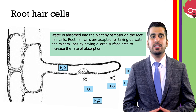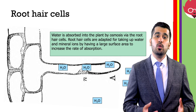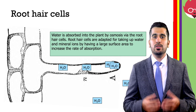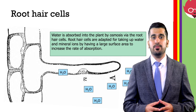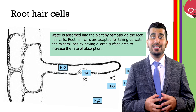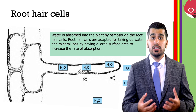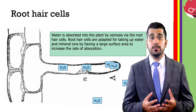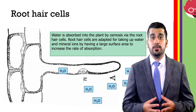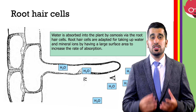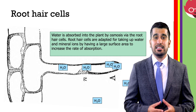We have spoken about how water is moved up the plant via the xylem, but let's talk about how water is absorbed by the roots. Water is absorbed into the plant by osmosis via the root hair cells. The root hair cells are adapted for taking up water and mineral ions — they have a large surface area to increase the rate of absorption. They can also absorb mineral ions, containing lots of mitochondria to produce ATP to move minerals via active transport.